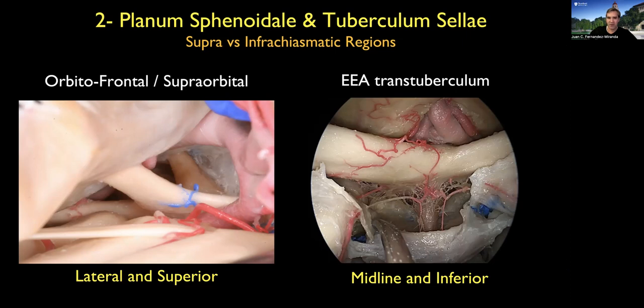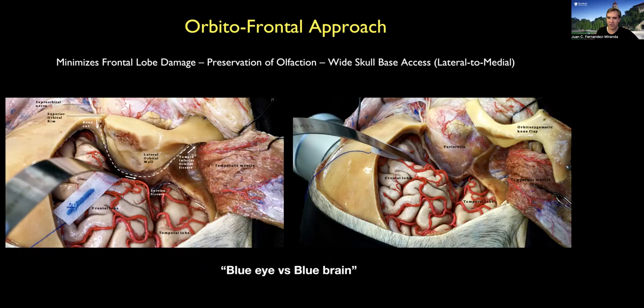Next, let's move to the area of the planum sphenoidale and tuberculum sellae region. For tuberculum sellae meningiomas, most of them I like to do endonasally, but planum meningiomas I like to do most of them through an open approach. The reason is that the tumors are mostly suprachiasmatic, and there is not significant benefit of going endonasal — there is benefit in the infrachiasmatic space, but not so much in the suprachiasmatic.